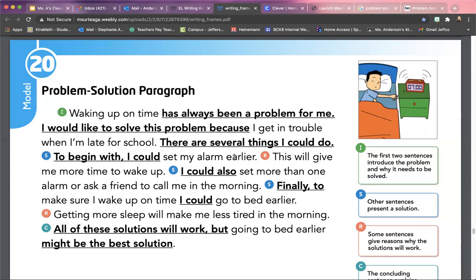So to begin with, I could set my alarm earlier - so there is one solution to his problem: set his alarm earlier. Well why would you set your alarm earlier? Oh, this will give me more time to wake up. That makes sense. So kind of like they did in this second sentence here, I would like to solve this problem because I get in trouble when I'm late for school. So he's saying why he wants to solve the problem, and then he's saying why these solutions will work.